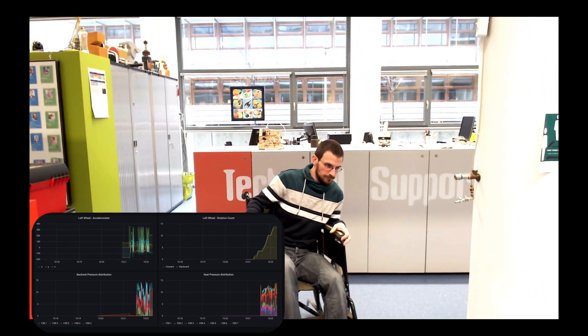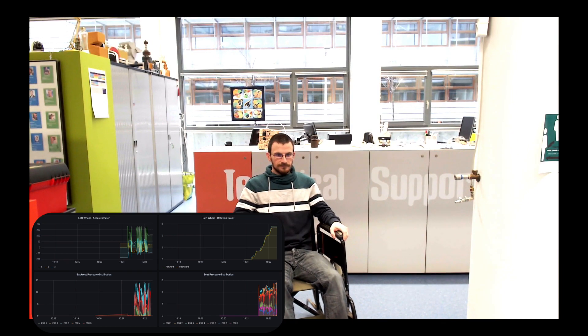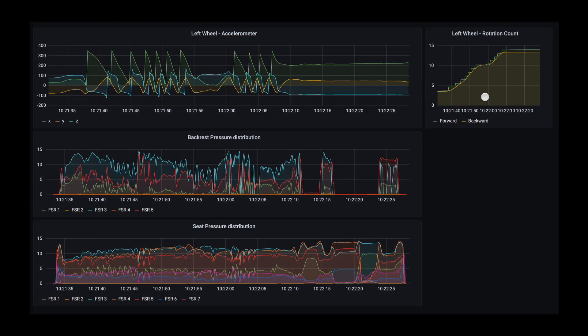Now, let's see. So this is how the data looks like. We have the rotation count here on the top right corner and we can see that as I'm going in the corridor the count is increasing, turning around not much happening and then it's increasing again.